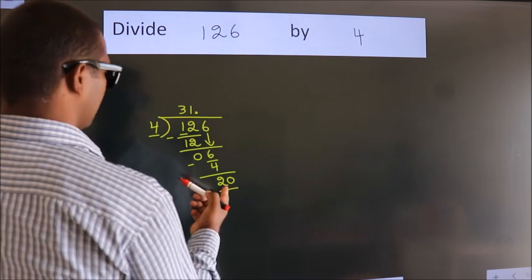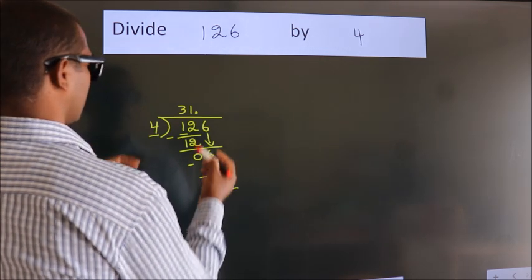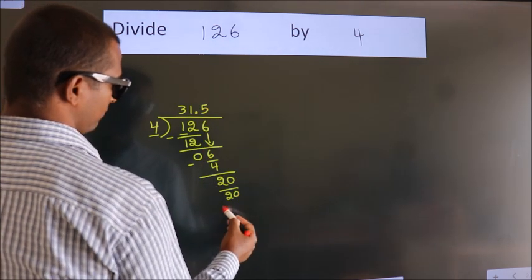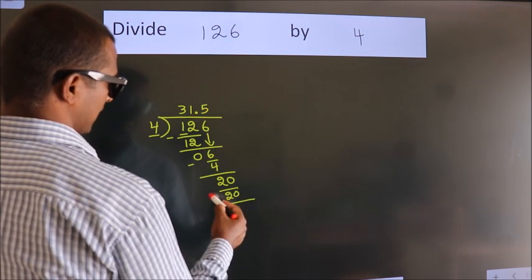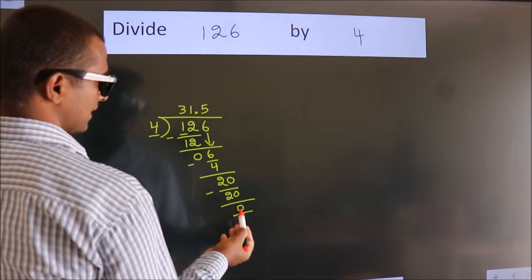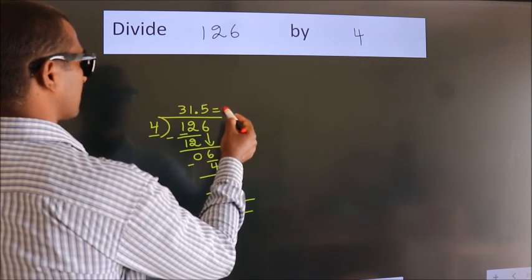When do we get 20 in the 4 table? 4 fives is 20. Now we subtract. We get 0. We got remainder 0, so this is our quotient.